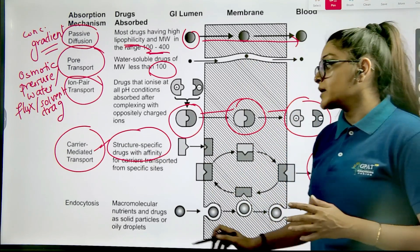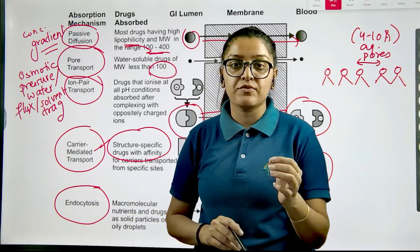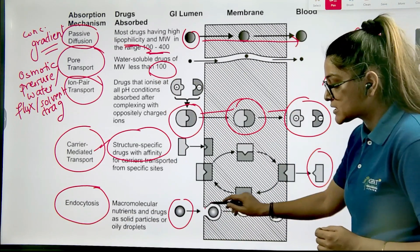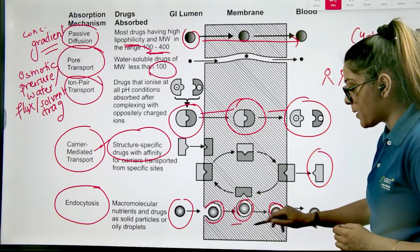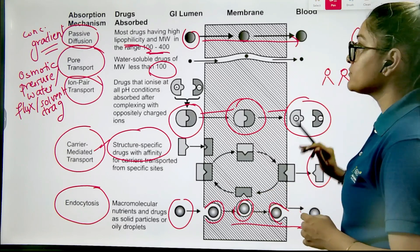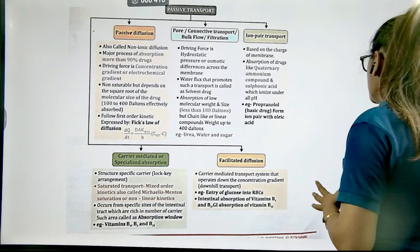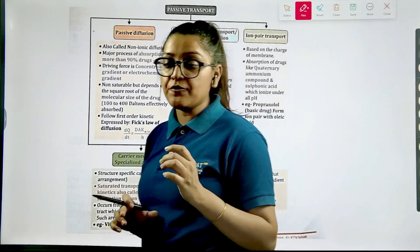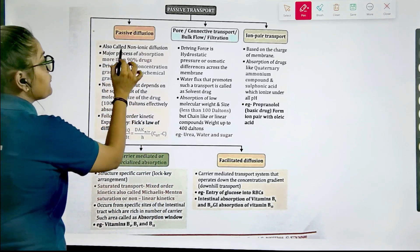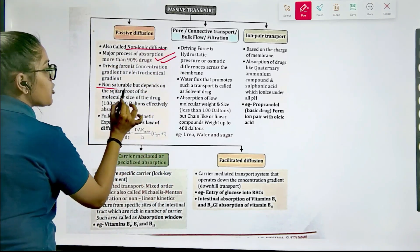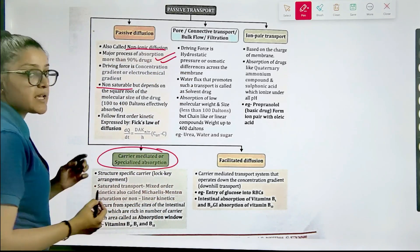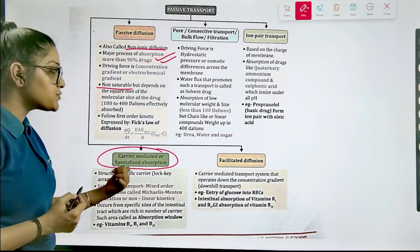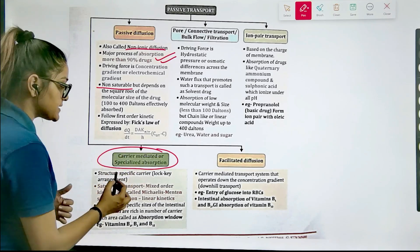The last mechanism is endocytosis, which is part of the vesicular transport mechanism, whereby drugs or nutrients pass the cell membrane via an engulfing mechanism. Now comparing passive diffusion and carrier-mediated transport: passive diffusion is also called non-ionic diffusion, and the driving force is concentration gradient. It is non-saturable. In carrier transport, because it is a capacity-limited process, it is saturable and structure specific.